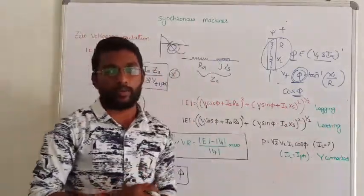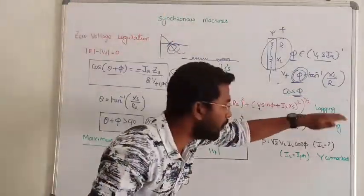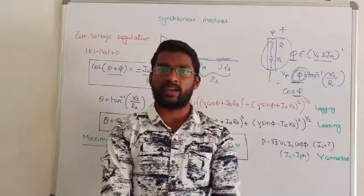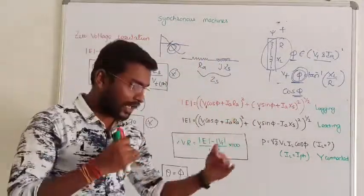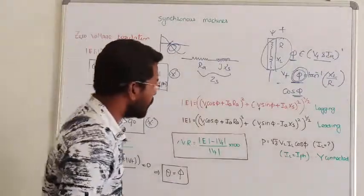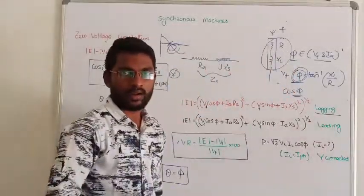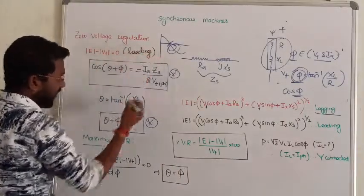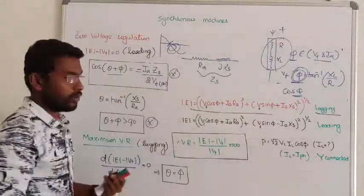If you differentiate and equal to zero, the actual condition is θ equals φ. That is the point where we are going to get maximum voltage regulation. To bring maximum voltage regulation, I have to keep all terms in addition, all the addition value maximum.